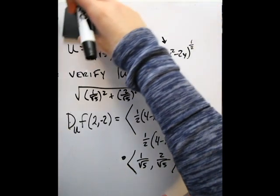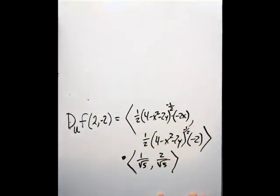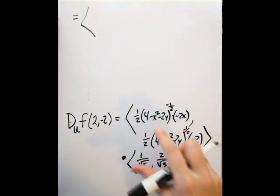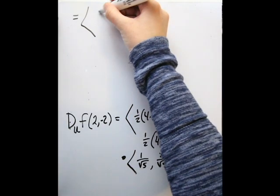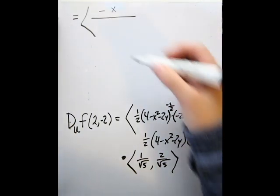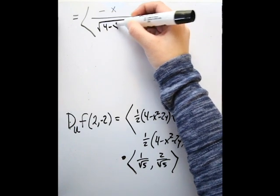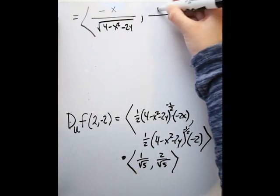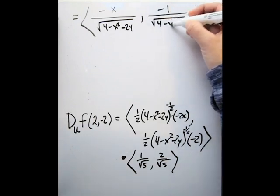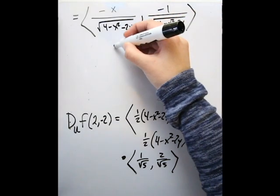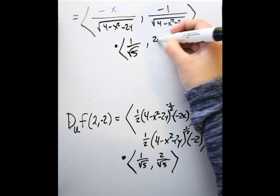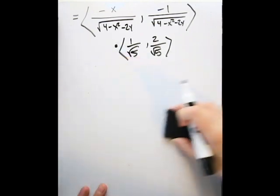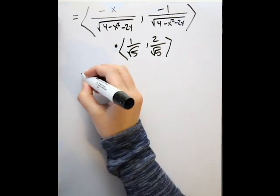Now we simplify. For the first component, -2x times 1/2 gives us -x, and the negative 1/2 power goes to the denominator in radical form. For the second component, -2 times 1/2 gives -1 in the numerator, with the same denominator. We then take the dot product of this with our unit vector. Remember that the dot product always yields a scalar, so we will not have a vector at the end — we're going to have a scalar.